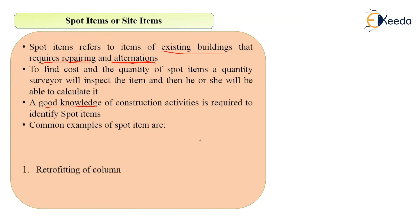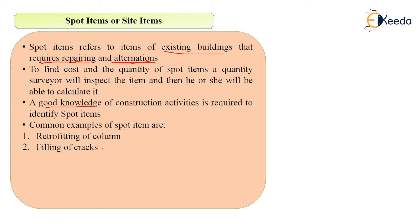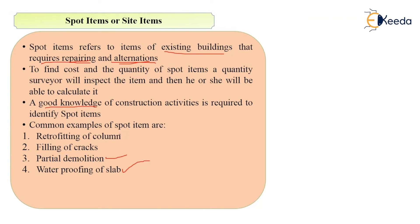Examples of spot items include: retrofitting of a column, filling of cracks in plaster work, demolition of a particular structural member, and waterproofing of a leaking slab. Spot items are only applicable to existing buildings, since new buildings do not need repairs or alterations. Items related to existing buildings that need repair or alteration come under the category of spot items or site items.